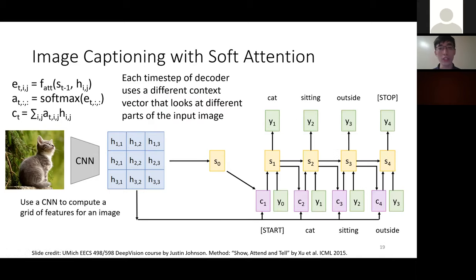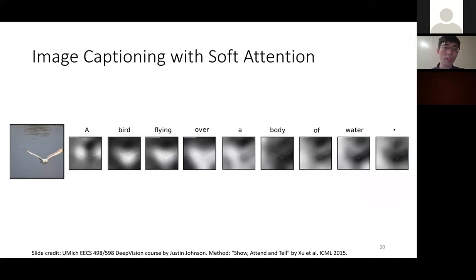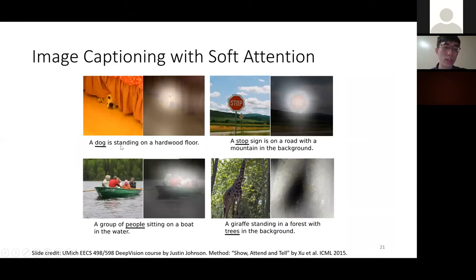The key takeaway is that at each time step of the decoder, we use a different context vector that looks at different parts of the input image. Visualizing the attention weights overlaid on the original image shows bright regions with high attention values. For example, while generating the word 'dark,' the model attends to that region; generating 'stop sign' causes the model to attend to the correct region.